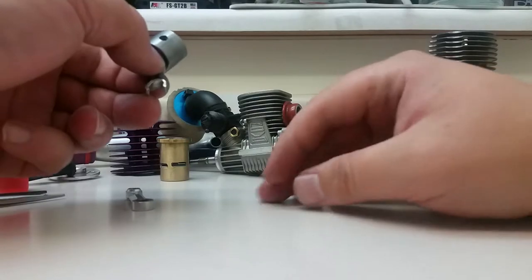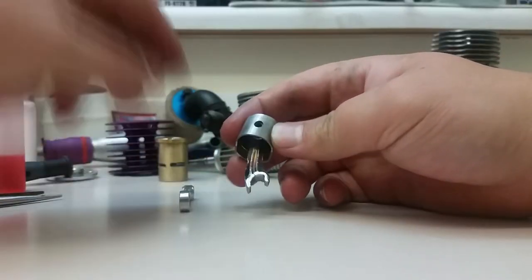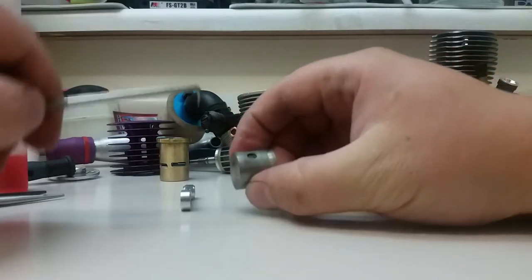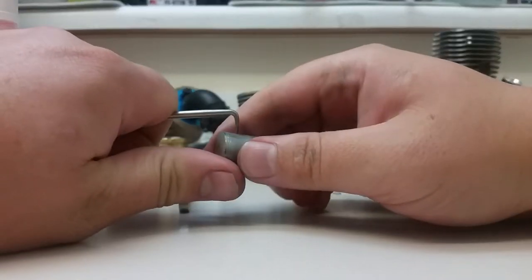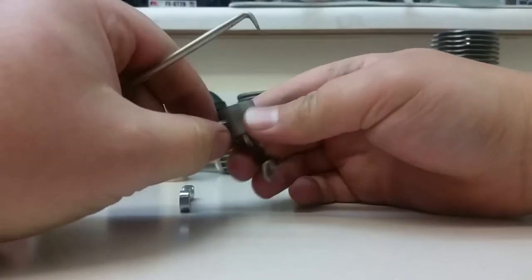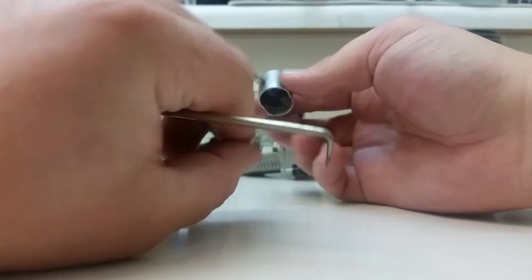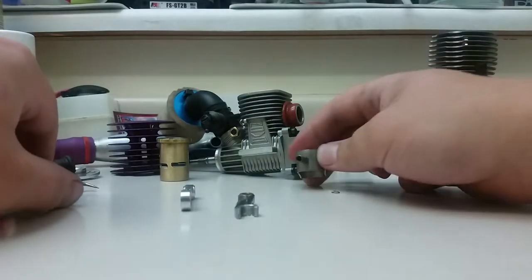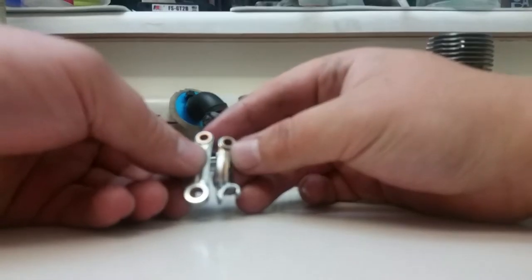Now that we have that removed, we want to remove the pin itself. We'll use my pick and push the pin out. You don't need to remove the pin all the way. There is our severely damaged connecting rod.